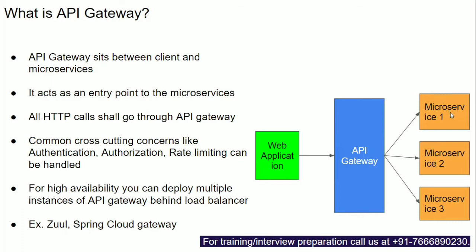For example, authentication is a cross-cutting concern — you have to perform authentication in microservice one, microservice two, and microservice three. Such problems can be handled in your API gateway. Various cross-cutting concerns like authentication, authorization, rate limiting, and monitoring can all be handled in your API gateway.